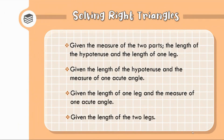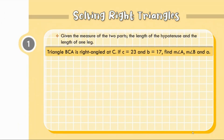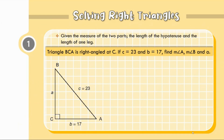Let us start with our first given. The length of the hypotenuse and the length of one leg is given. Let us consider triangle BCA right-angled at C. If C is equal to 23 and B is equal to 17, find the measure of angle A, measure of angle B, and length of side A. Let us sketch the triangle with hypotenuse equal to 23 and the other leg equal to 17.